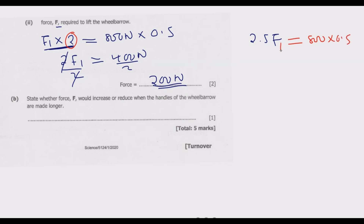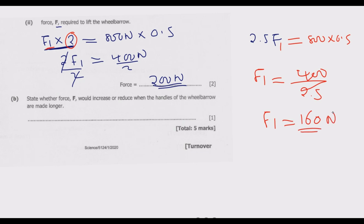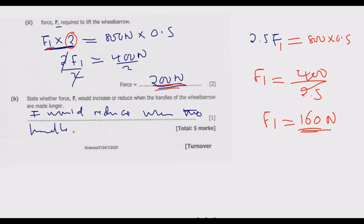Setting 2.5F equal to 800 times 0.5 gives 2.5F equals 400, so F equals 400 divided by 2.5, which is 160 newtons. We now only need 160 newtons compared to 200 newtons before. Increasing the distance reduces the required force, while reducing the distance increases it. Therefore, F would reduce when the handles of the wheelbarrow are made longer.